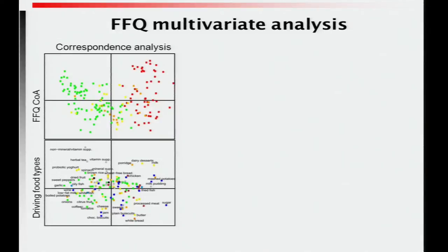We can visualize the food frequency data using multivariate analysis — correspondence analysis — which has the advantage that you can also visualize the variables. The community samples are in green and the long-stay samples are in red, a very good split, very similar to the microbiota. The foods are color-coded: green is fruit and veg, skewed off towards the community; brown is meat, skewed off towards the long-stay; and blue is high-sugar, high-fat foods, also skewed towards long-stay. Generally, the community eats more fruit and veg, while long-stay eats more meat and high-fat, high-sugar foods.